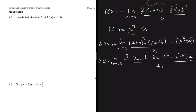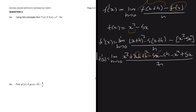So basically at this step, every term that doesn't have an h is supposed to fall apart. If that is not true, then you've done something wrong. In this case, x squared is getting subtracted by minus x squared, 2xh has an h so it remains, h squared will remain, and 5x is getting added by plus 5x so that falls apart. So at the end of the day we get f prime of x equals to the limit as h approaching 0 of 2xh plus h squared minus 5h, divided by h.